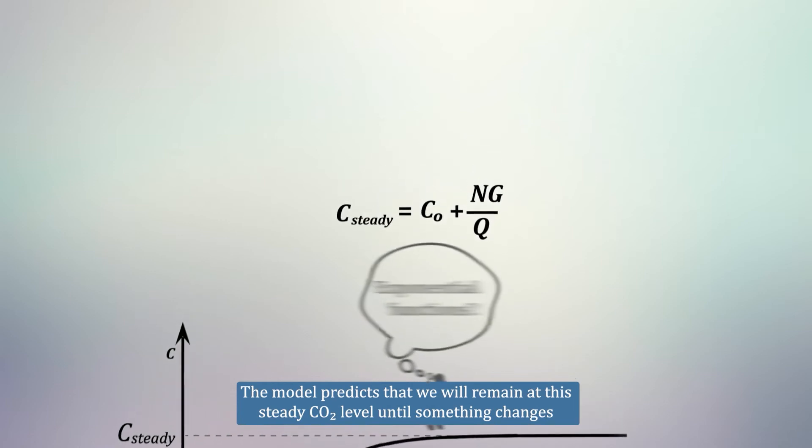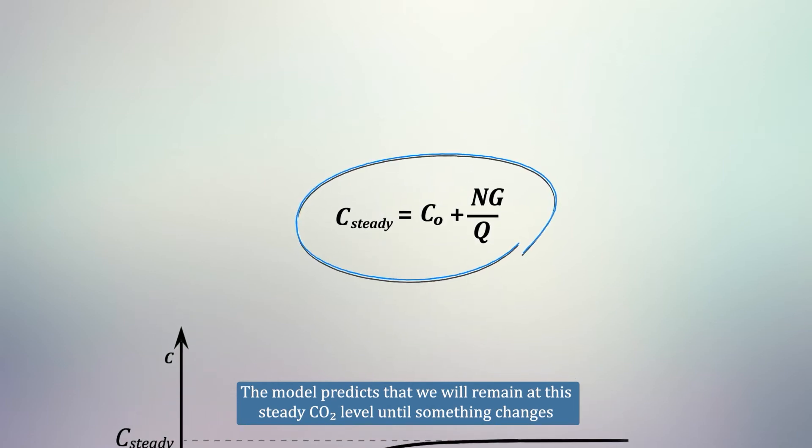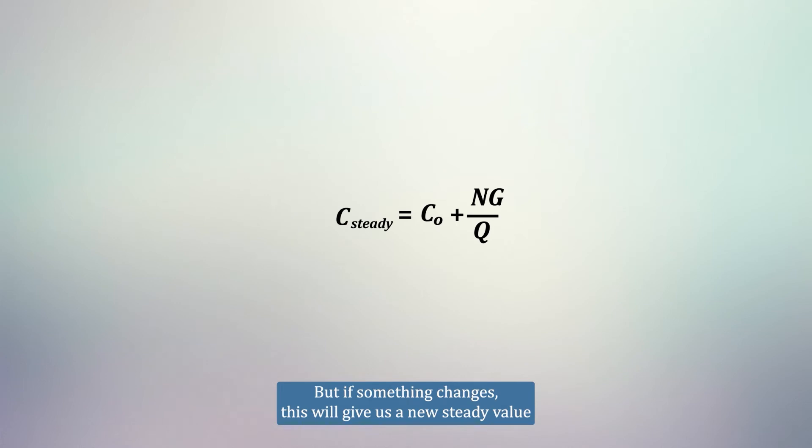The model predicts that we will remain at this steady CO2 level until something changes. But if something changes, this will give us a new steady value. For example, we can see that if the number of people increases, so does the equilibrium CO2.